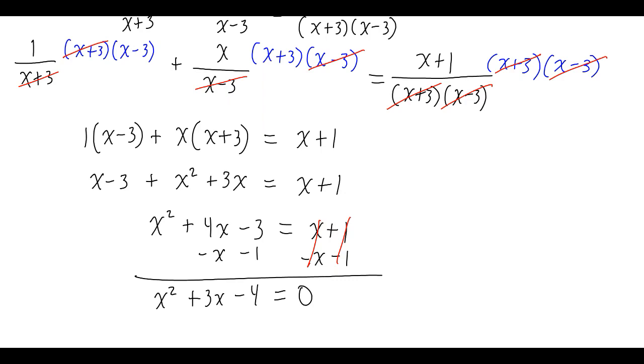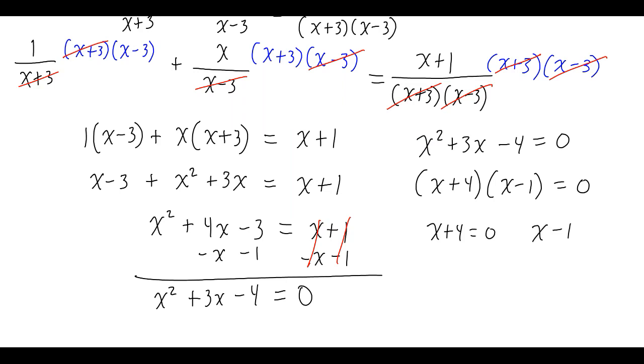So now I have a quadratic equation to solve. x squared plus 3x minus 4 equals 0. I can factor that: x plus 4 times x minus 1 equals 0. Set each part equal to 0: x plus 4 equals 0, x minus 1 equals 0.